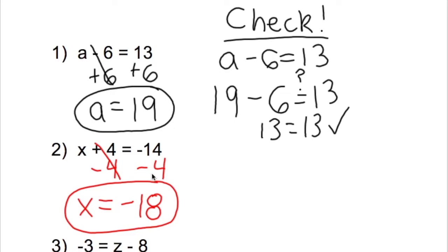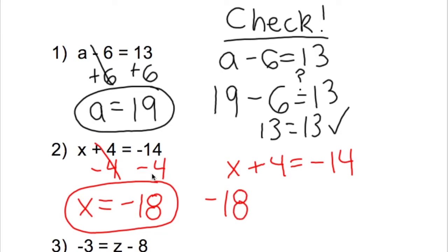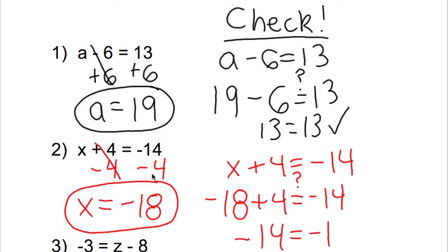Is this correct? We always have to double-check our answer. The original problem is x plus 4 equals negative 14. We said x is negative 18, so we have negative 18 plus 4. Is that equal to negative 14? Negative 18 plus 4 is negative 14 — we are equal on both sides, and we know our answer is correct.